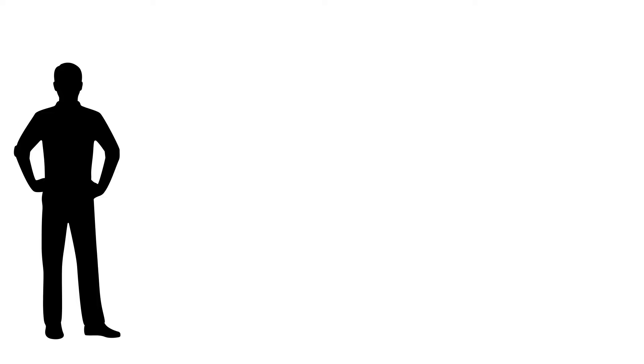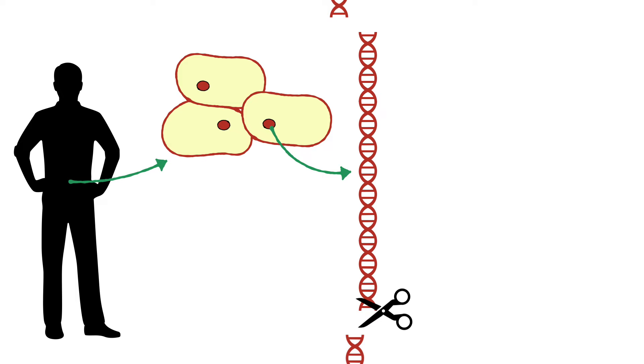Next, we need the gene for the feature that we want. In this case, the gene for human insulin from a human cell. We use the same restriction enzyme that we used with our plasmid to cut out the human insulin gene. It now also has sticky ends.